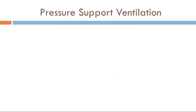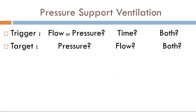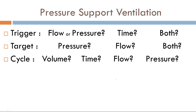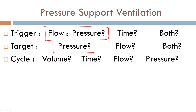Pressure support ventilation — same questions: What is the trigger? What is the target? What is the cycle? Pause the video. In pressure support ventilation, we do not set a respiratory rate. All breaths are triggered by the patient, so the trigger variable is flow or pressure — whatever the operator sets. The target variable in pressure support ventilation is pressure, because you set a pressure support level.